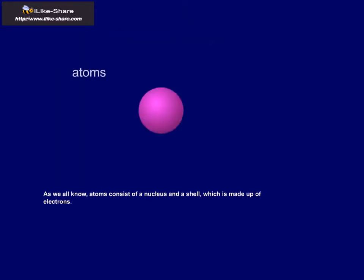As we all know, atoms consist of a nucleus and a shell, which is made up of electrons.